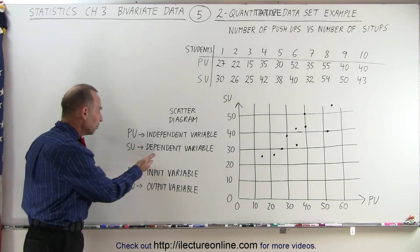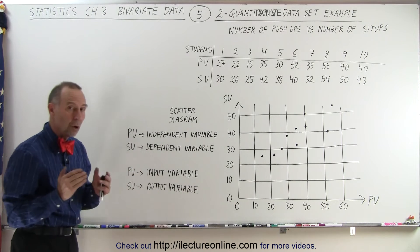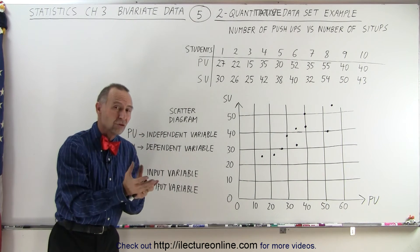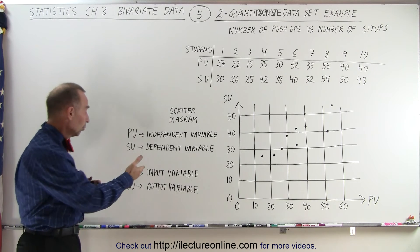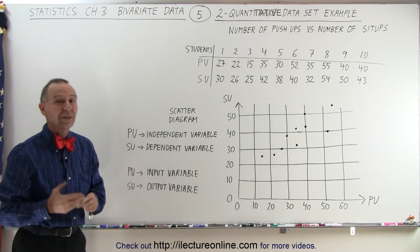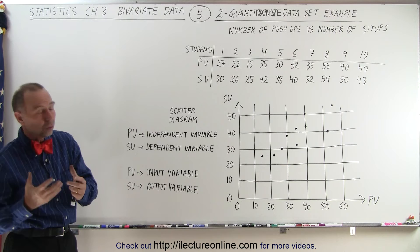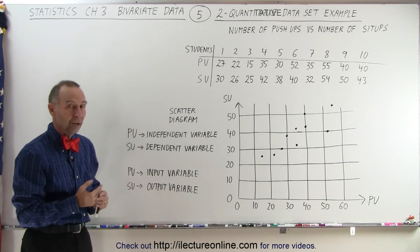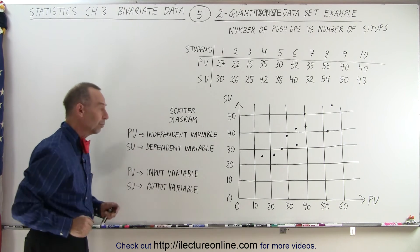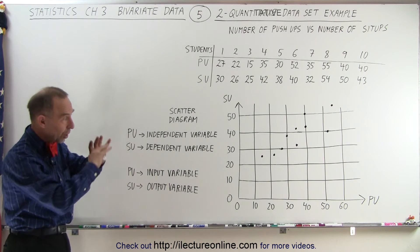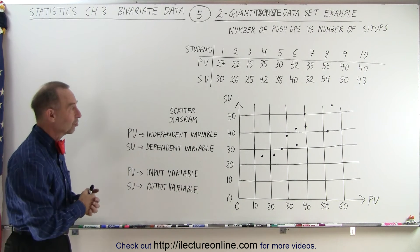Sometimes we also call it the input variable versus the output variable. We put into the equation or into the analysis the first set of data, the number of push-ups. And out of that, we should be able to deduce the number of sit-ups. So input variable versus output variable. And later on again, we'll show you how to do that when we do regression and correlation.